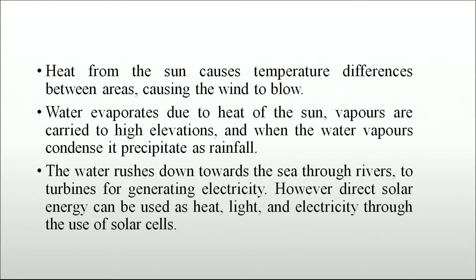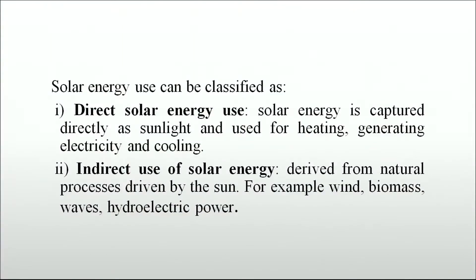Direct solar energy can be used as heat, light and electricity through the use of solar cells. Solar energy can be classified as direct solar energy — captured directly as sunlight for heating, generating electricity and cooling — and indirect use of solar energy, which is derived from natural processes driven by the sun, for example wind, biomass, waves and hydroelectric power.